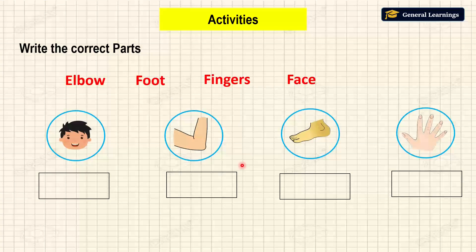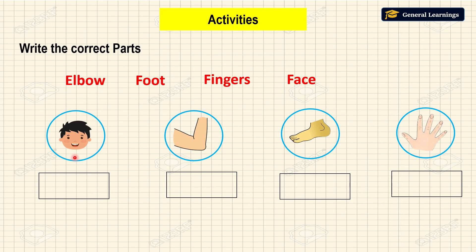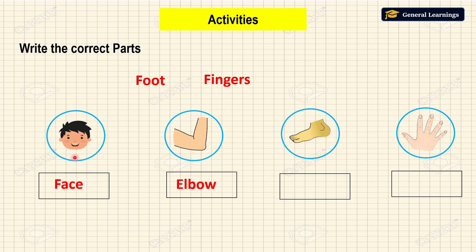Next, we will see some other activities. Now we are going to write the correct parts of our body in their respective places. First one — what body part is it? It is looking like a face. Yes, it is correct, it is face. Next picture, any guess? It is a picture of elbow. Moving to the next picture — it is looking like a leg or arm. I got it, it is feet. And lastly, it is fingers.